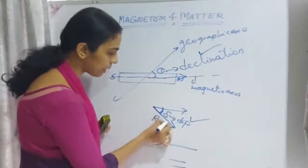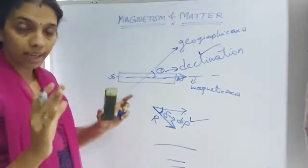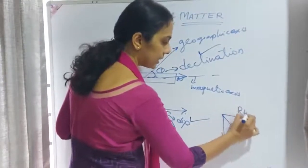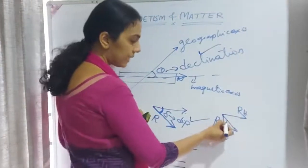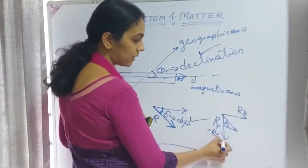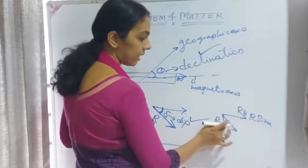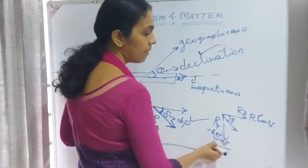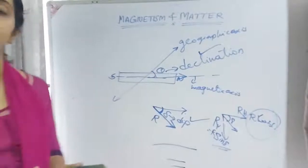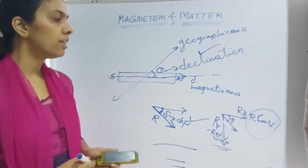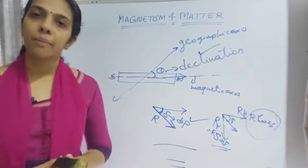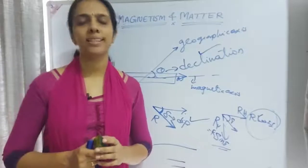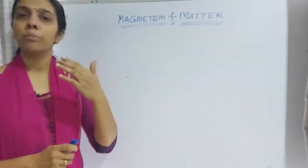The third magnetic element is the horizontal component of Earth's magnetic field. The resultant R has a horizontal component and a vertical component. If the angle of dip is δ, then the horizontal component is R·cos δ and the vertical component is R·sin δ. These three — declination, dip or inclination, and horizontal component — are the three magnetic elements of Earth.